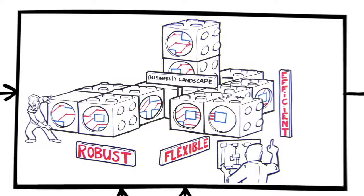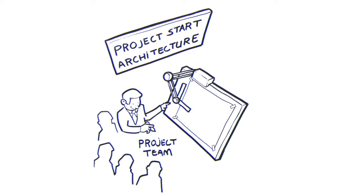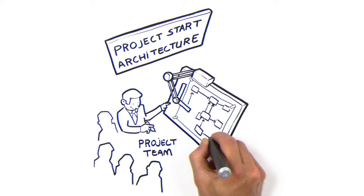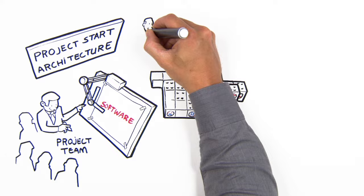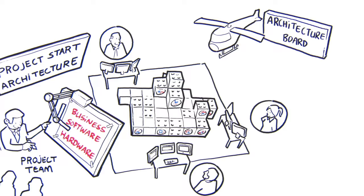For this reason, each new project needs a project start architecture. This is created by a project architect who is part of the project team. He or she writes a plan explaining how the total landscape will look when the project is complete. This plan includes the applications we've set up, what they do for the business, and the hardware they require. The project start architecture is evaluated by the architecture board. In this board, architects from every domain in our company work together and supervise the entire landscape.